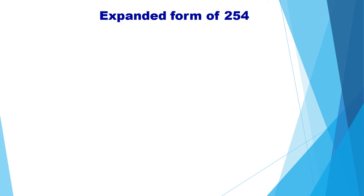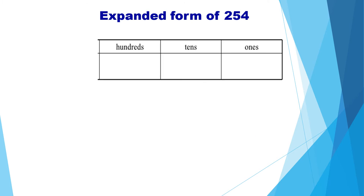Let us see one more example: the expanded form of 254. Let us write the place values — ones, tens, hundreds. So we have two hundreds, five tens, and four ones.